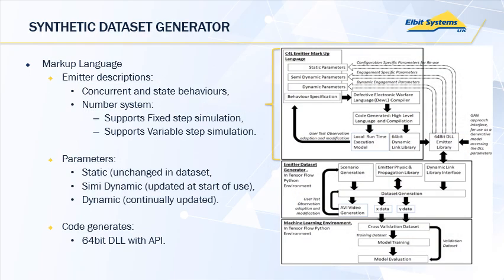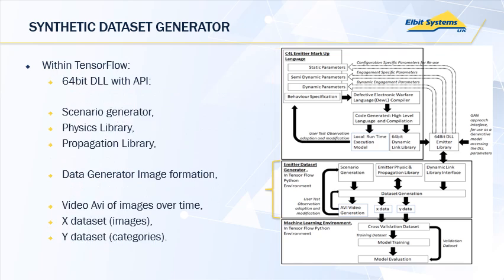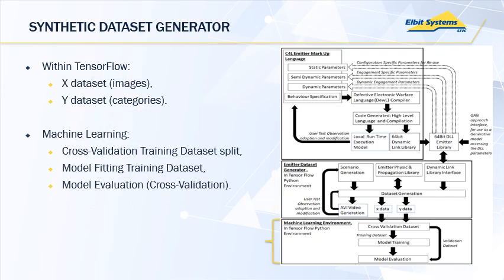The synthetic dataset generator is in three major parts. The first part is an emitter description language, which describes how an emitter functions and the kind of pulse width parameters and scan patterns it has. The second component does the physics and propagation modeling and creates a dataset of images and categories. That can then be used in a machine learning environment, such as TensorFlow, for categorization type applications and other research.